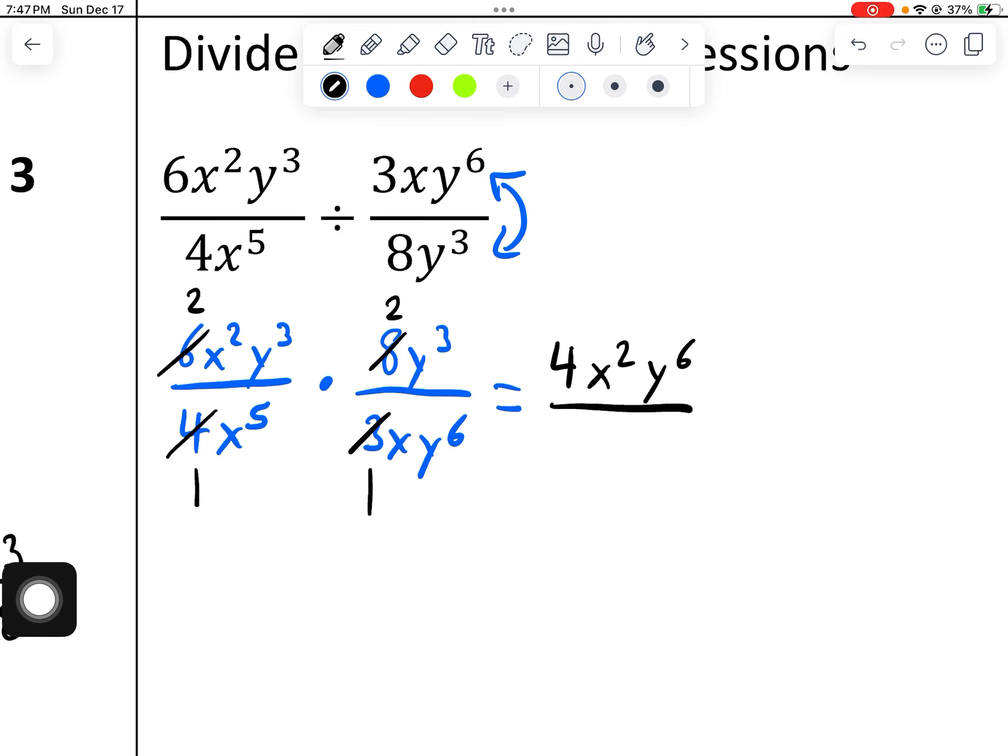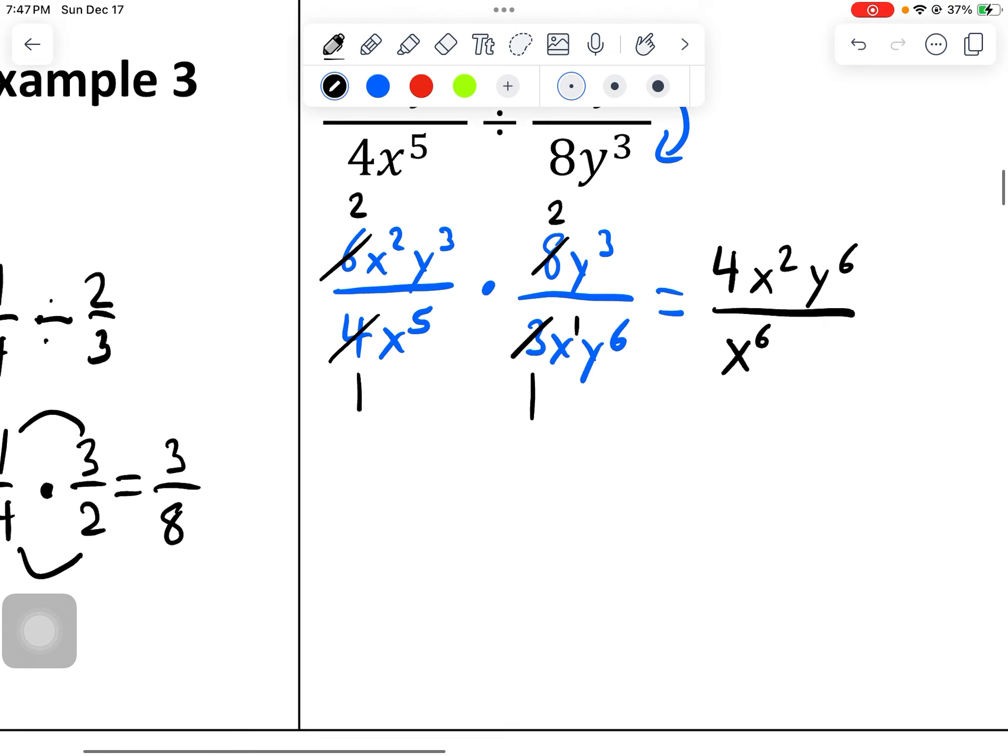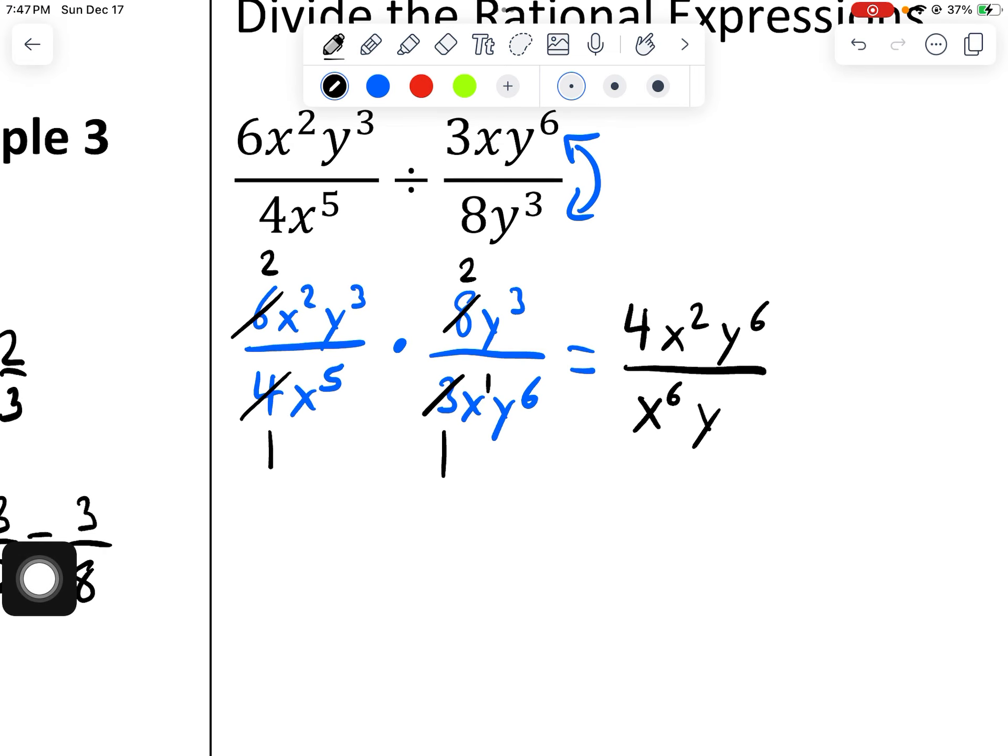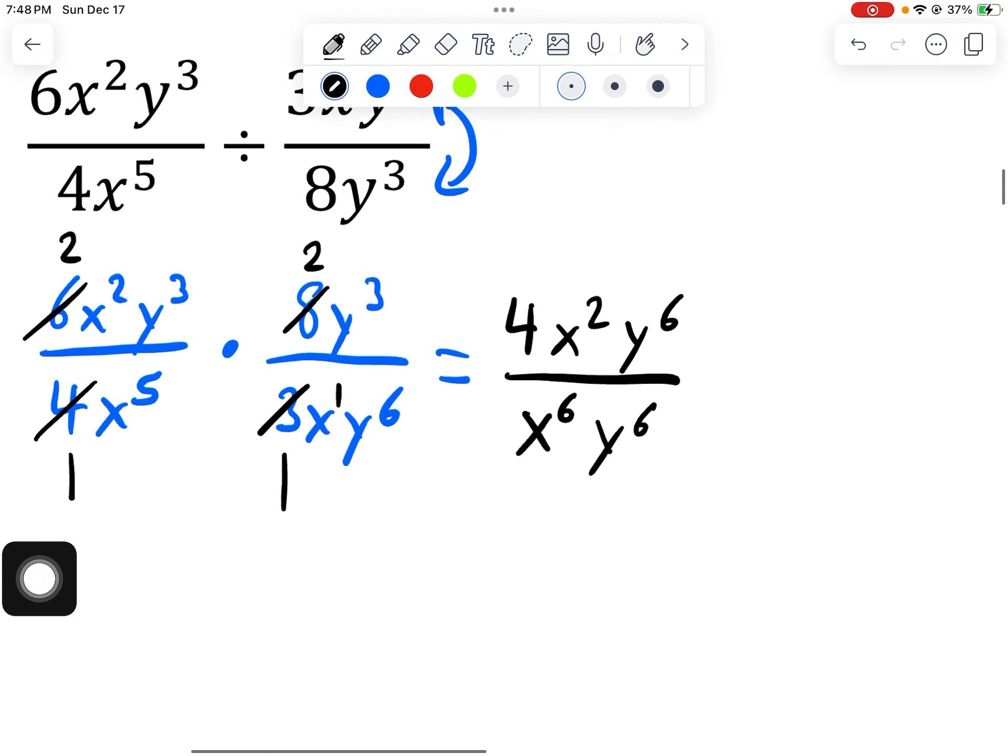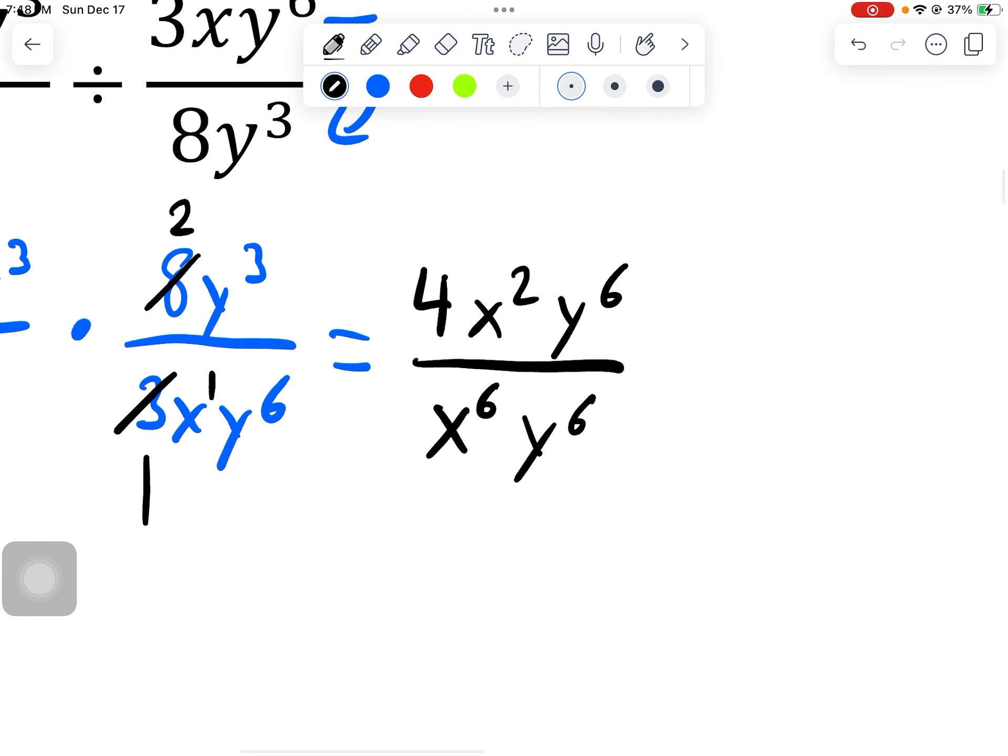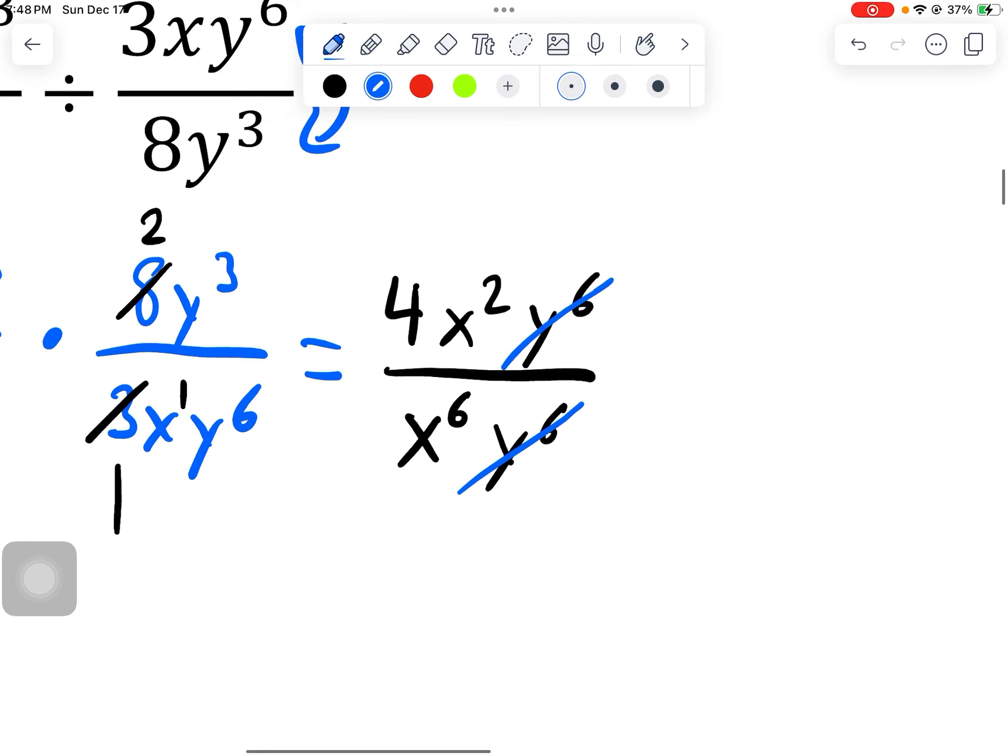On the bottom, I have x to the 5th, and then I have a lone x here. I could put the ones, but those don't matter because it's just 1 times 1. So this would be x to the 6th because I'm adding those exponents. And then I have y to the 6th. And now I just got to reduce. So y to the 6th goes away because I have the same thing on the top and the bottom. And since I have two x's on the top, I'm going to be left with 4 on the bottom. So my final answer is 4 over x to the 4th.